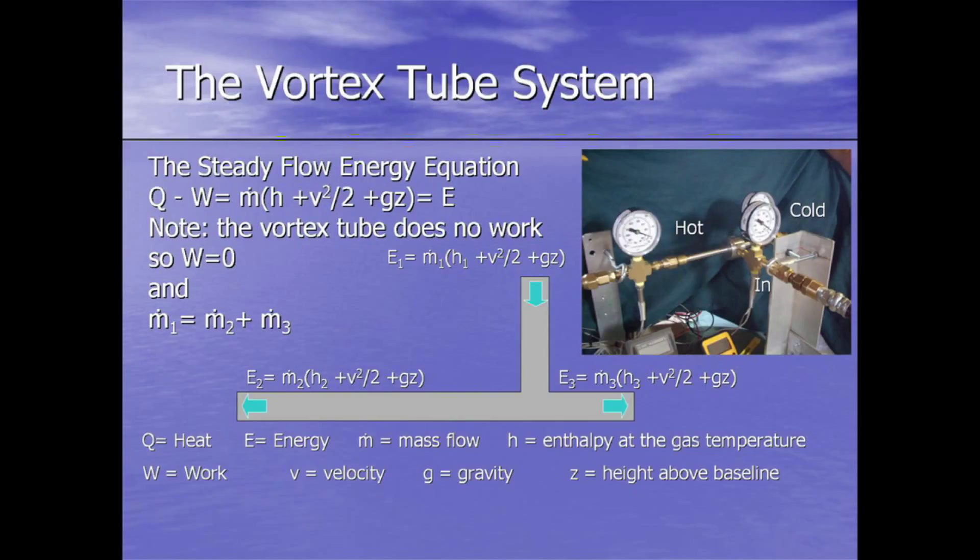To analyze the vortex tube system, we're going to look at the steady flow energy equation from thermodynamics. That says Q or heat minus work equals mass flow times enthalpy plus velocity squared over two plus gravity times Z, which is also equal to energy. This vortex tube does not do any work, and because of that, W goes to zero.